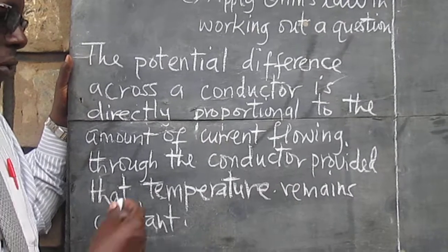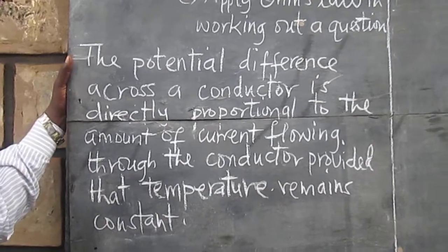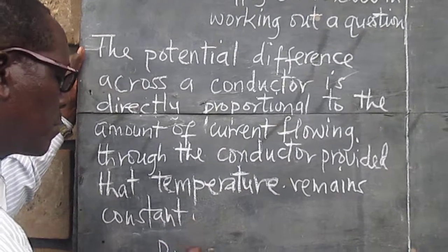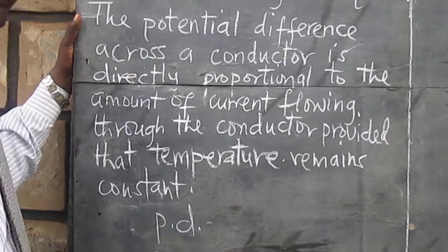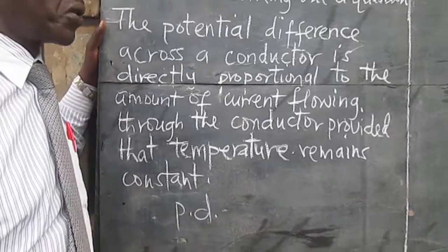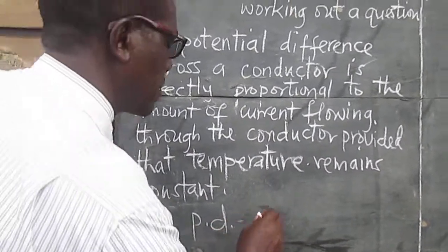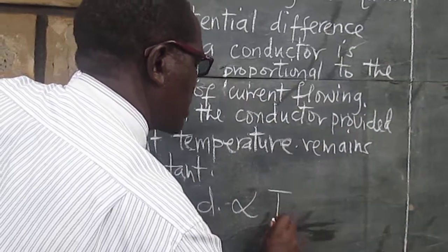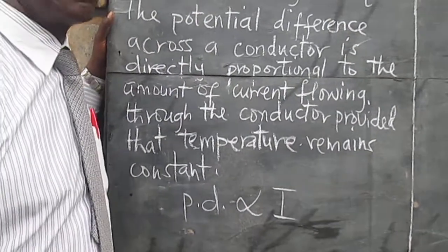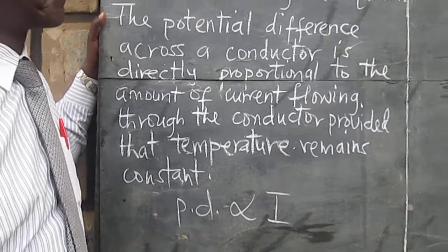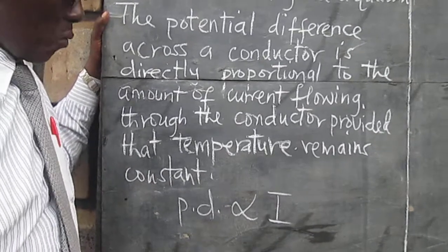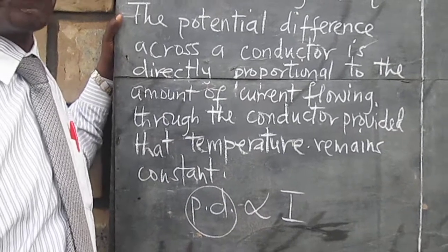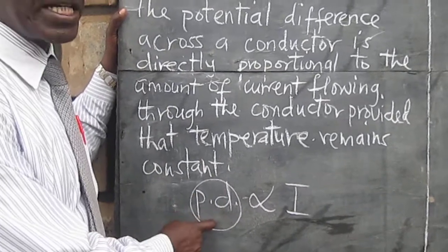The potential difference — we can say PD — is directly proportional to, or varies as, the current I, provided that temperature remains constant. We will almost always use V, capital V, in place of PD.